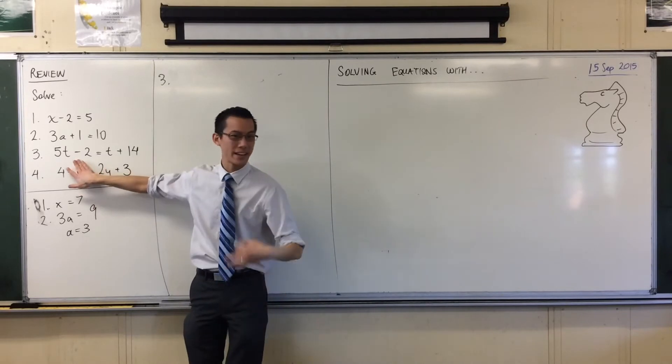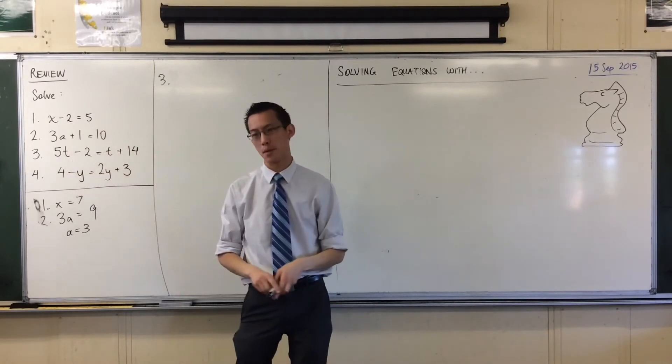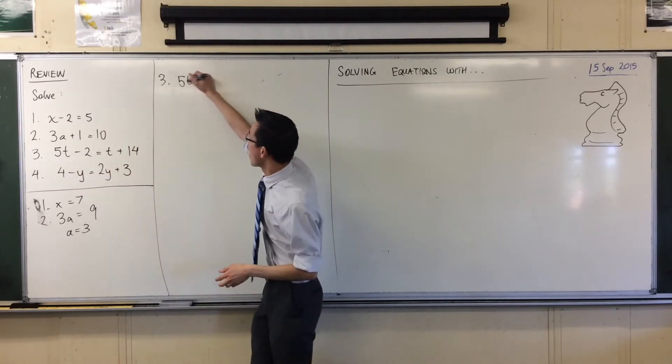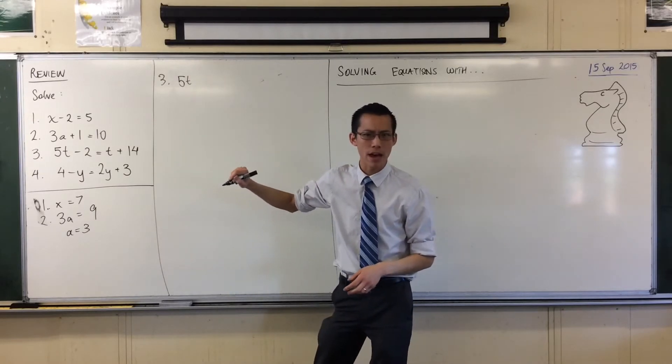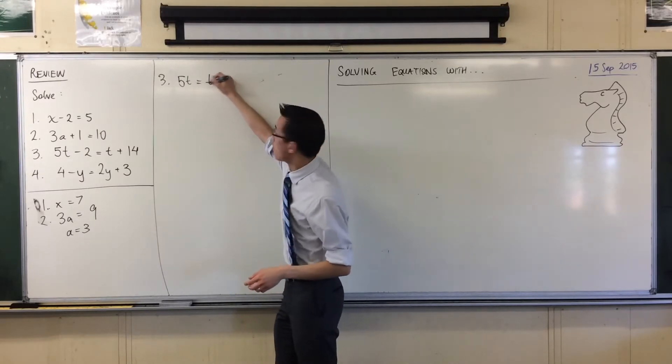Good, so the minus 2 is what I want to get rid of, so I'm going to add 2 to both sides. That leaves me with 5T on the left and what on the right? T plus 16, perfect, nailed it.